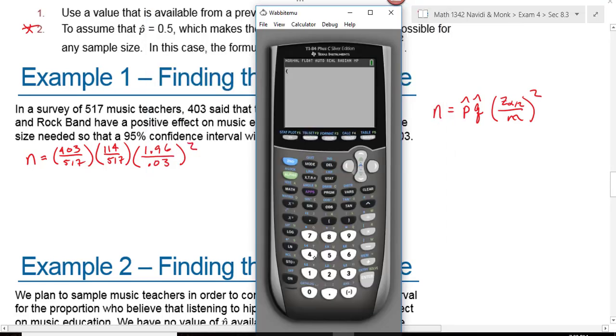Now I go to my calculator. Putting this in, I get 403 divided by 517 times 114 divided by 517 times 1.96 divided by 0.03, close the parentheses and then square that. I end up with 733.666. What will I say my sample size is?